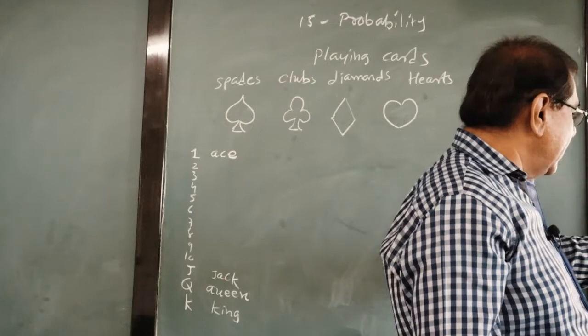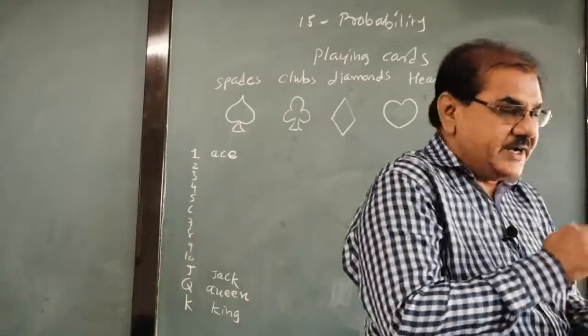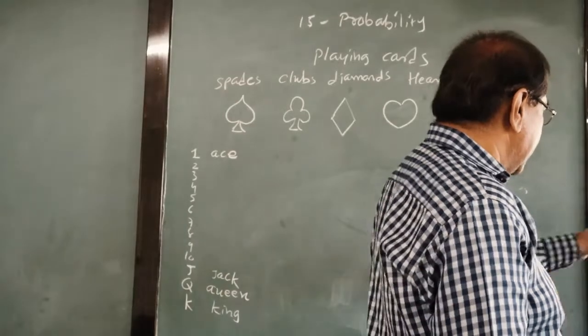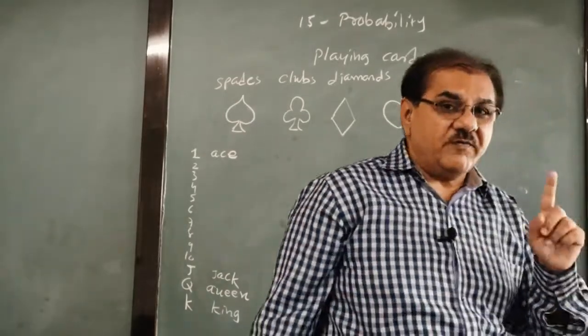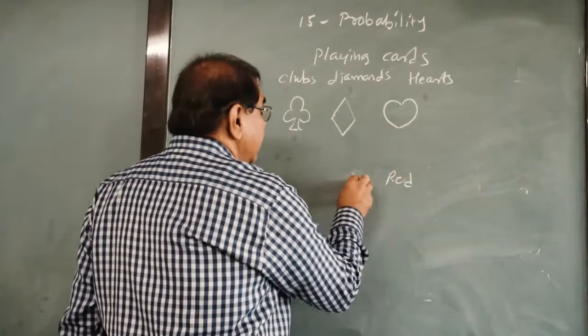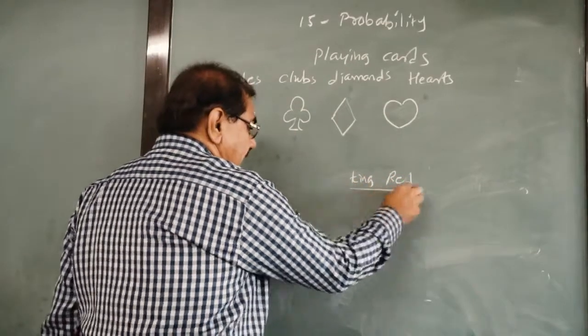We take one question from your exercise only. It is question number 14. One card is drawn from a well shuffled deck of 52 cards. Then find the probability of getting number 1, a king of red color.